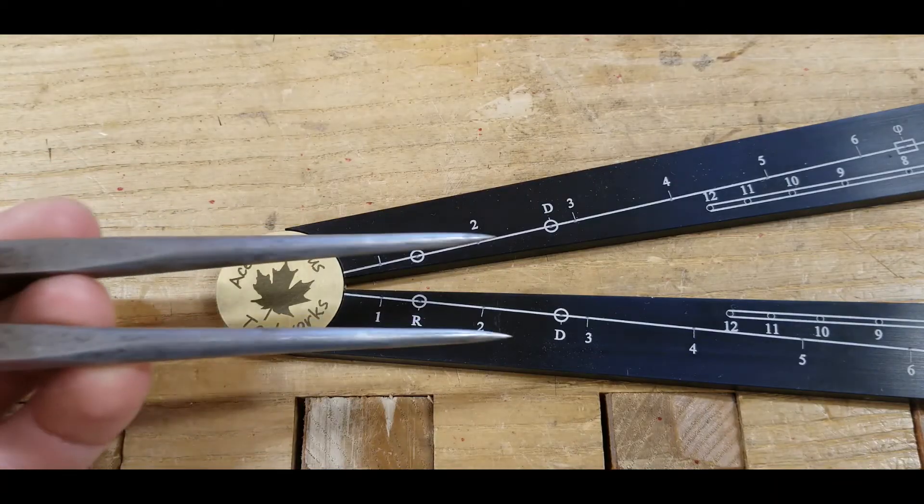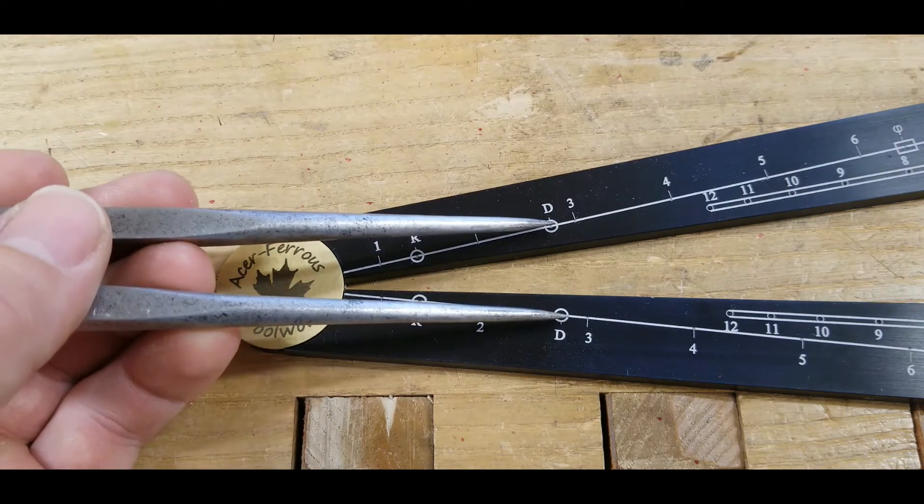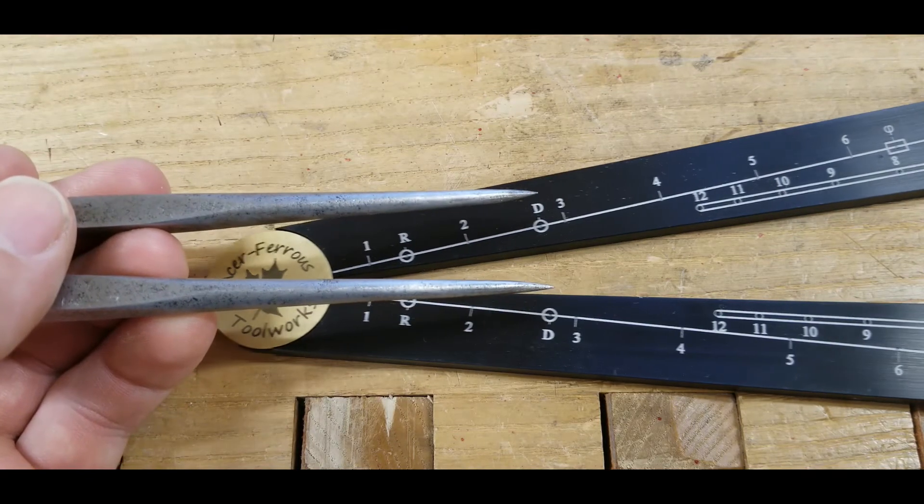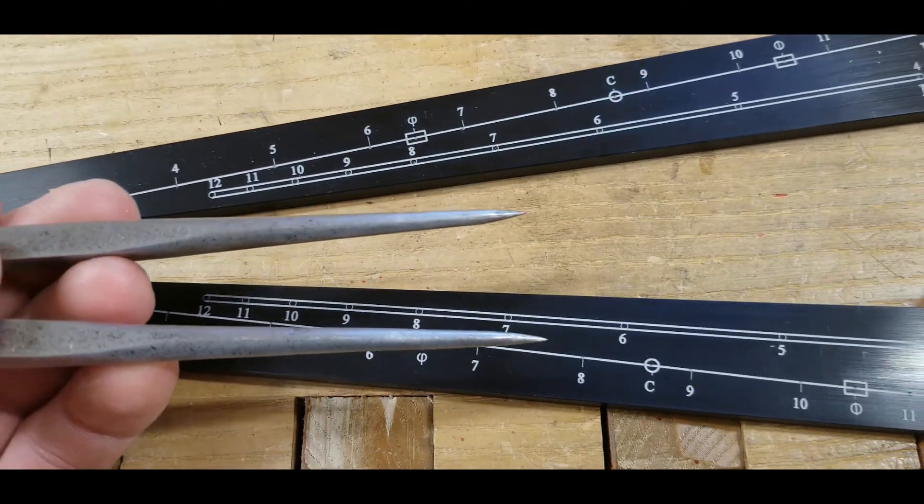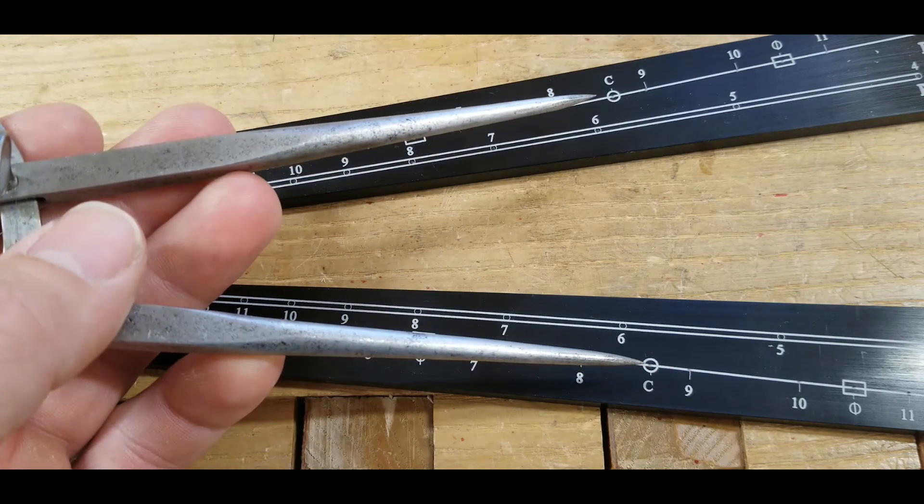With the sector now set, we can find the diameter of the circle here at the D, or moving down farther, we can find the circumference where the C mark is.